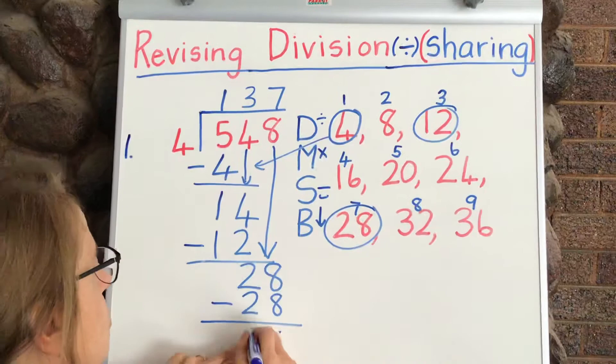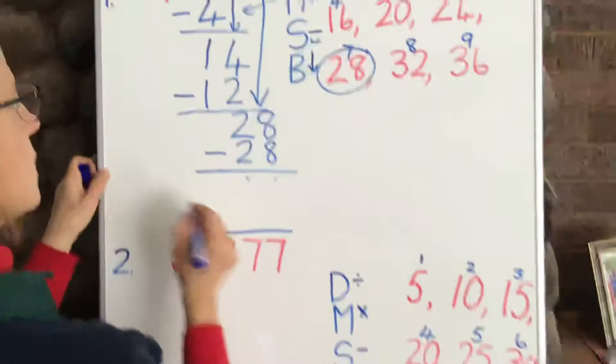We're going to put 7 at the top there. 7 times 4 is 28. Minus. 8 minus 8 is 0, 2 minus 2 is nothing. And here's our answer, 137.